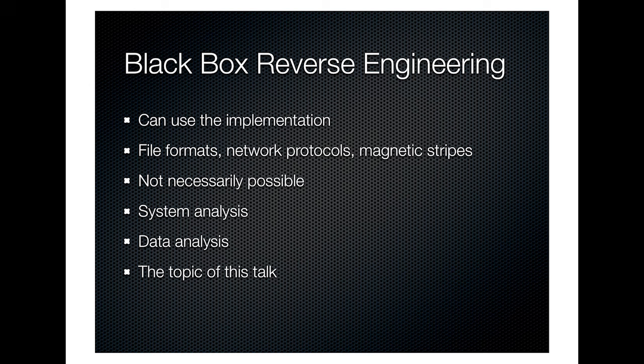We're talking about black box reverse engineering, which is a bit different. You can use the implementation but you can't see what's going on inside. We use this often for file formats, network protocols, and magnetic stripes. It's not necessarily possible — there are concepts of perfect encryption, like a one-time pad, where it's literally impossible. But it's often possible. You need to analyze systems to figure out where you can put data in and where you can get data out.